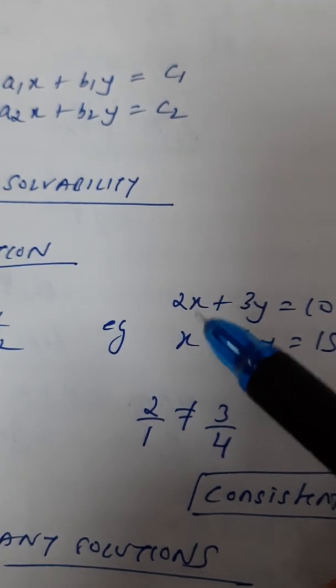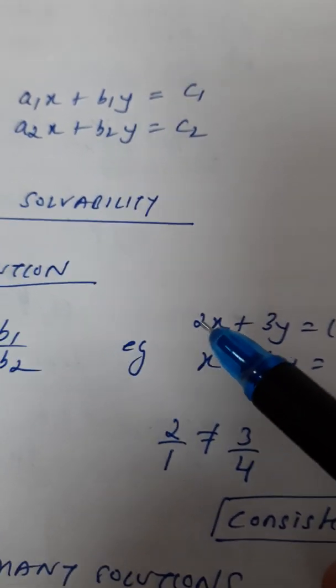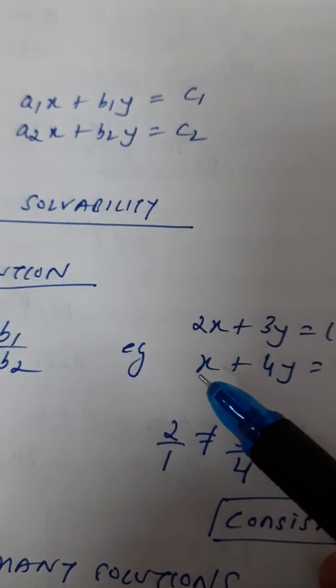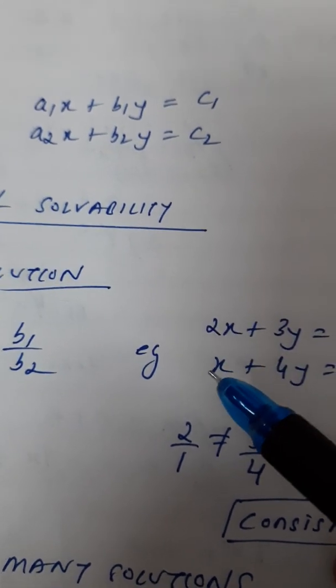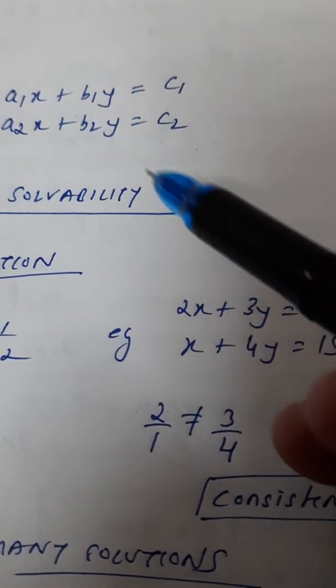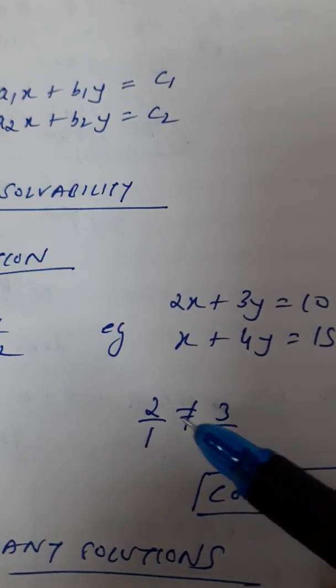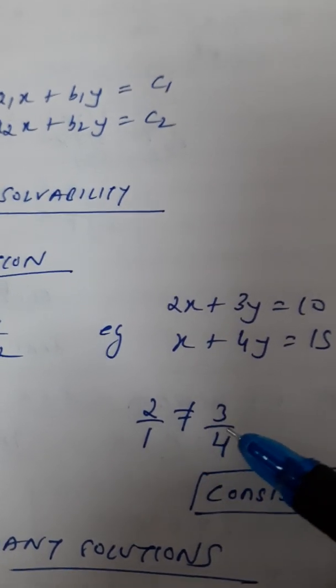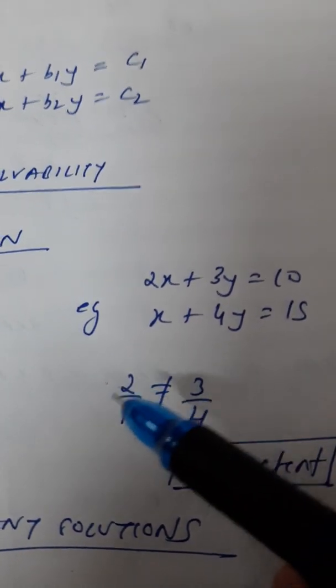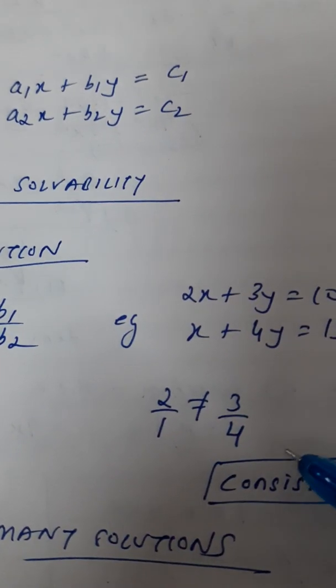Now, what do they mean by this A1 and A2? A1 and A2 are basically the coefficients of the X terms. So, what is A1 here? 2. And what is A2? 1. So, A1 by A2 is coming 2 by 1. And what is this B1 and B2 they are referring to? They are the coefficients of Y. So, B1 and B2 is what? 3 by 4. Now, you will observe, are they equal? They are definitely not equal. So, I can say it is consistent.